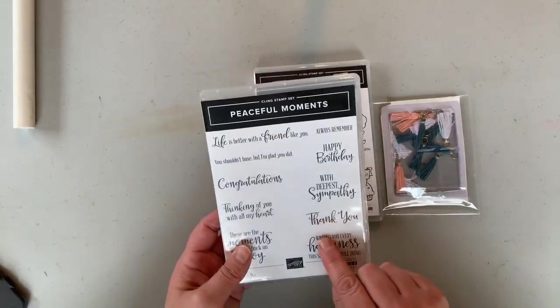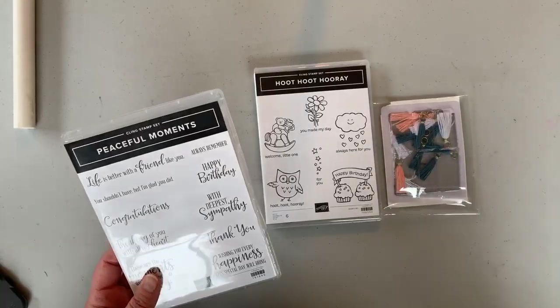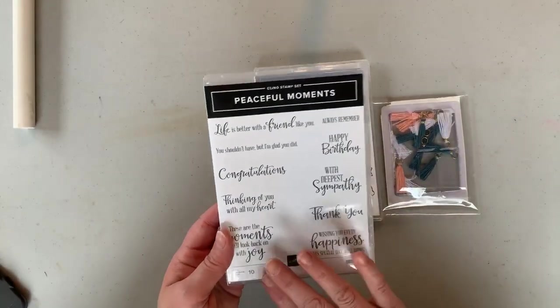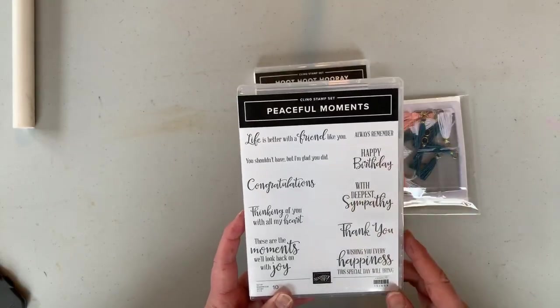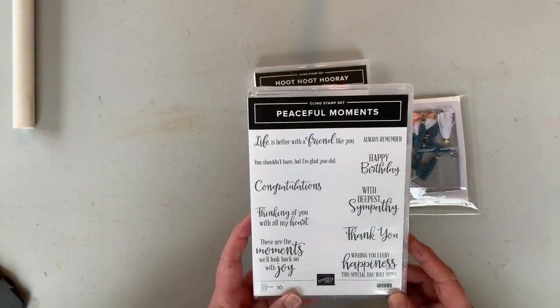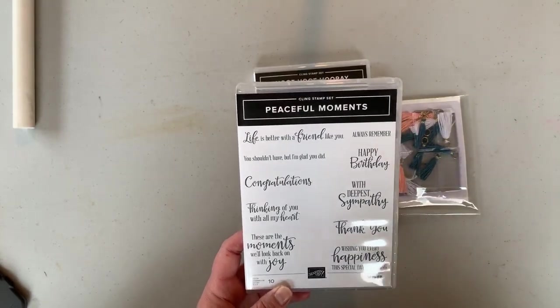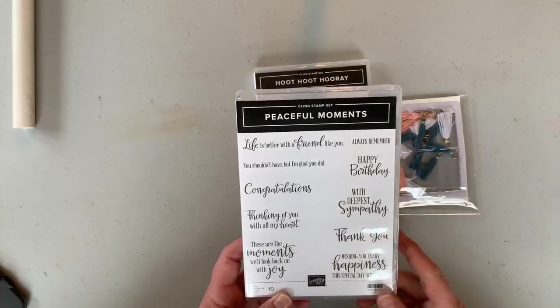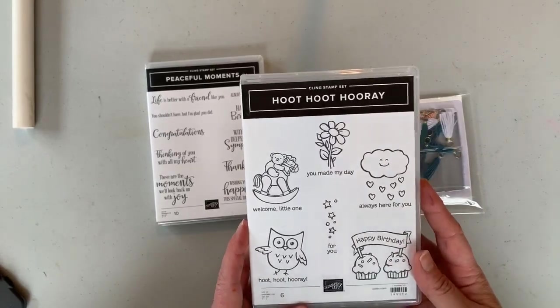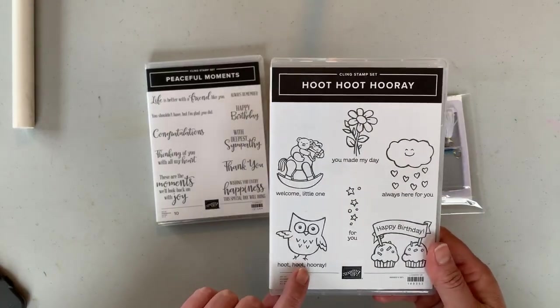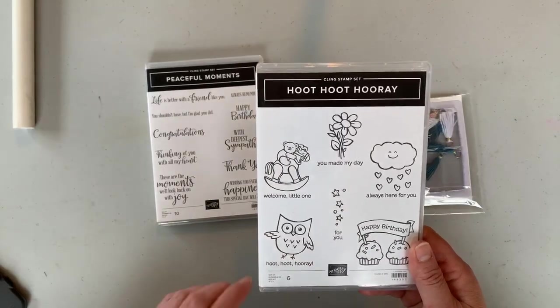I'm going to be using Peaceful Moments. A couple of these will be retiring out of the catalog. Peaceful Moments has a lot of great different sentiments and I've used it many times before. I like the font and there's happy birthday, sympathy, thank you, life is better with a friend like you. You've seen me use this a lot. The other stamps I'm using is Hoot Hoot Hooray, and I'm going to be using this little owl here. I think it's super cute. Lots of great images in that stamp set.